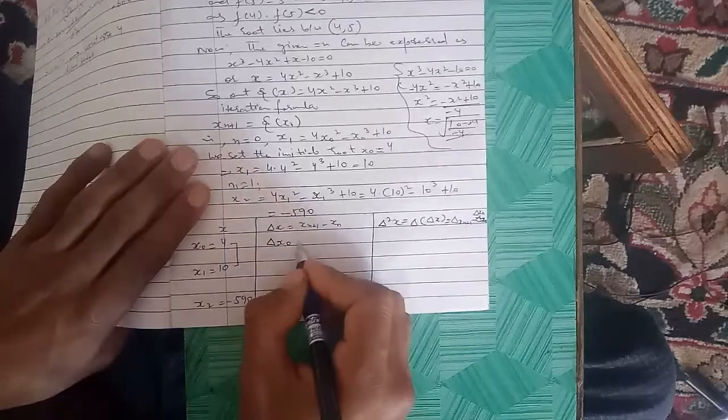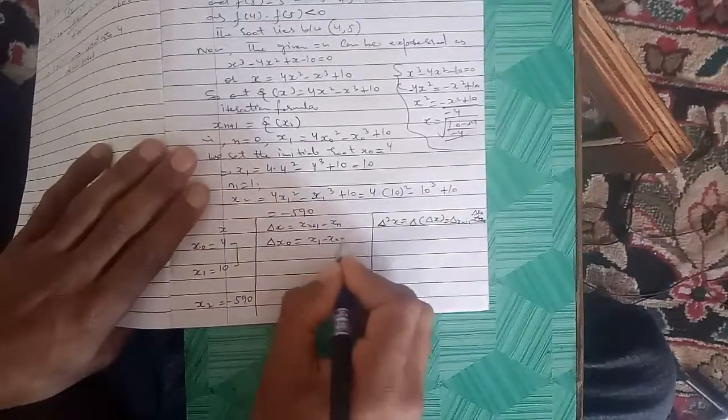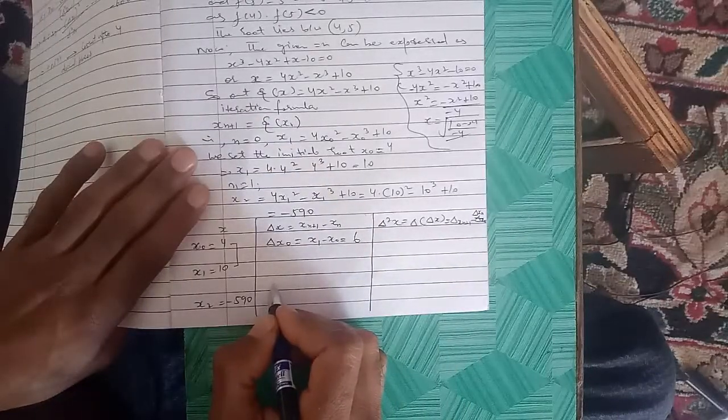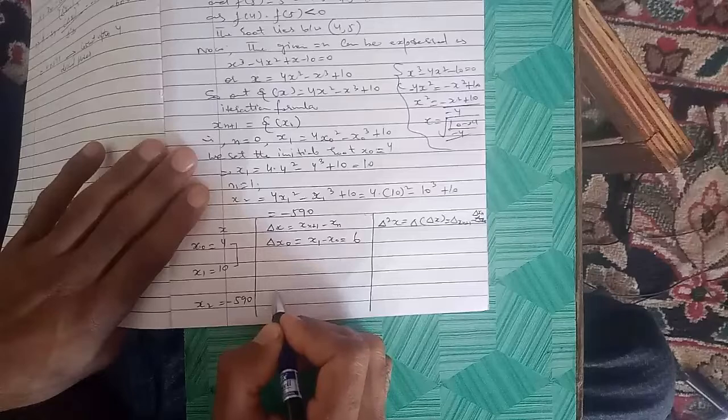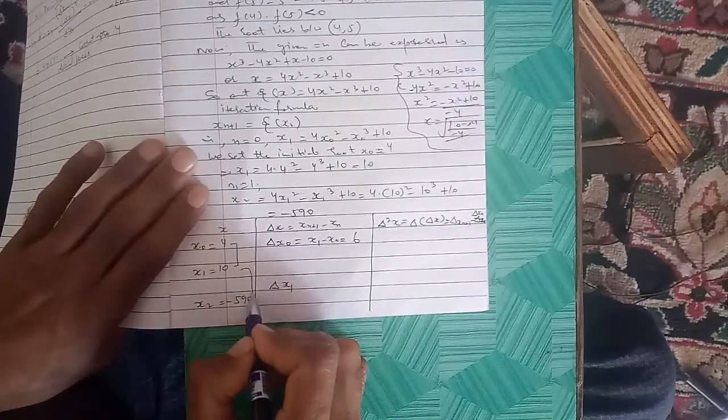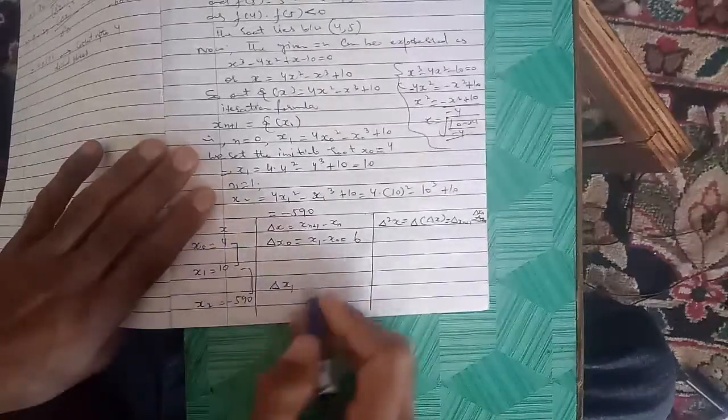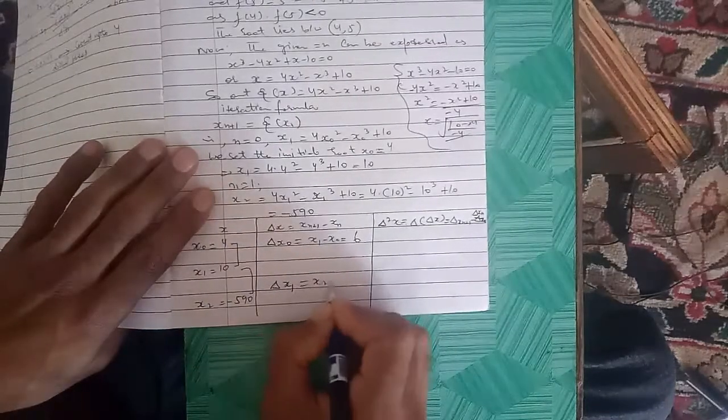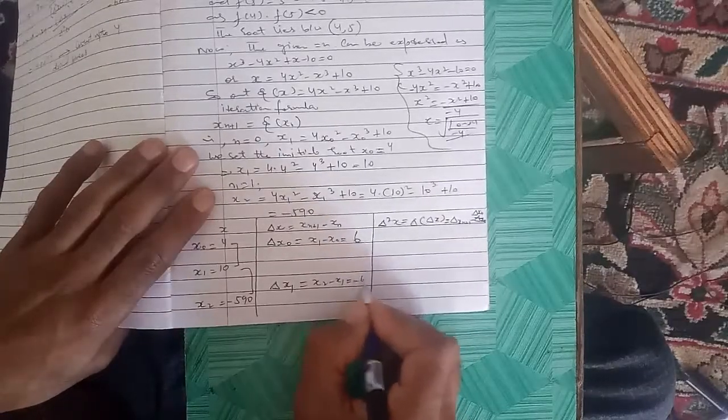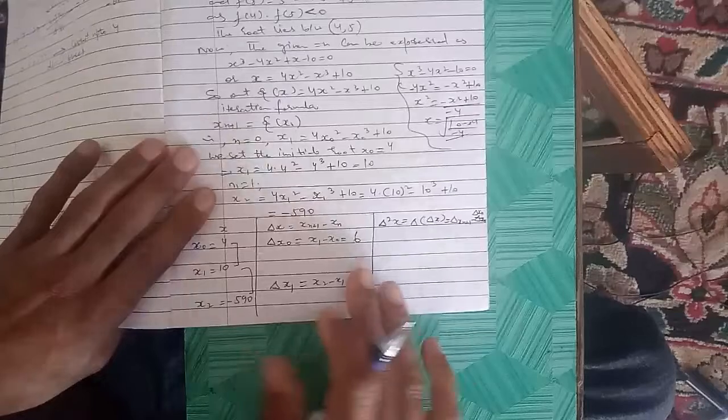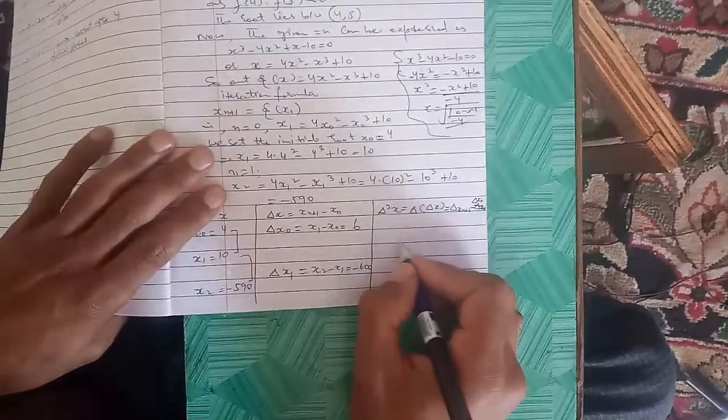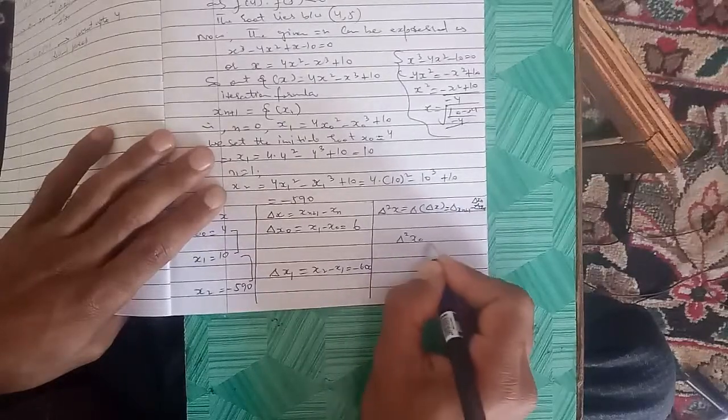Δx₀ equals x₁ - x₀ = 10 - 4 = 6. And Δx₁ equals x₂ - x₁, which equals -590 - 10 = -600.